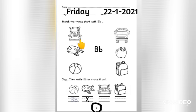Children, what picture is this? This is a picture of bat. Bah bah bat. Let's match.